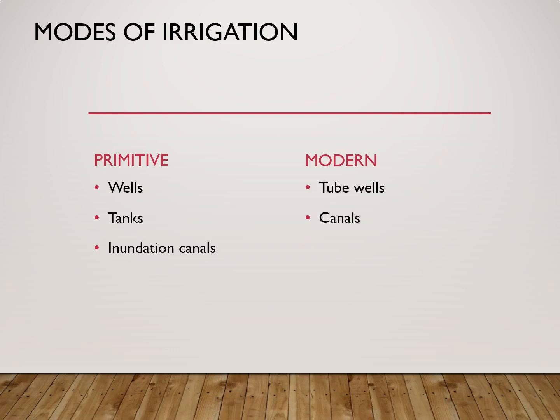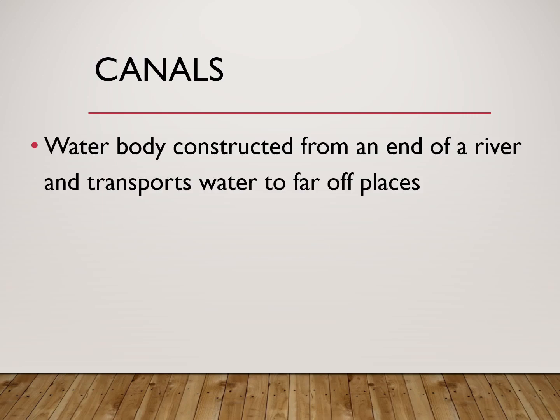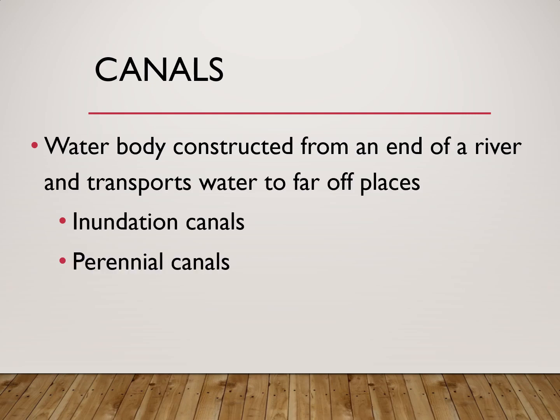Modern methods will include tube wells, perennial canals, and multipurpose projects. Canals are water bodies constructed from the end of a river which transport water to far-off places. In your topographical map you had a canal in D by 10 second quadrant and one canal under construction in D by 7 third quadrant. Canals are of two types: inundation canals and perennial canals.